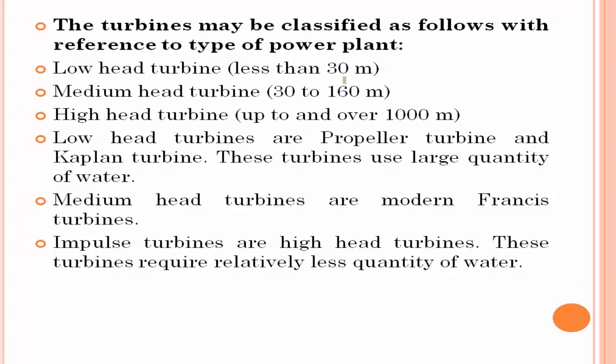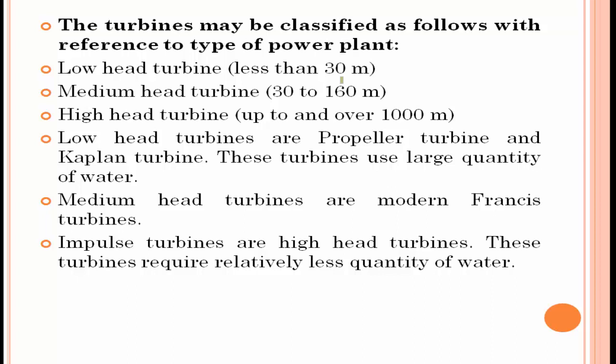Turbines may also be classified with reference to the type of power plant. For low head turbines, the head is less than 30 meters; medium head is 30 to 160 meters; high head turbine is above 160 meters or over 1000 meters. For low head, examples are the propeller turbine or Kaplan turbine, which use a very large quantity of water. For medium head, an example is the Francis turbine. For high head, an example is the Pelton wheel turbine.